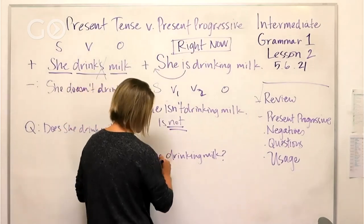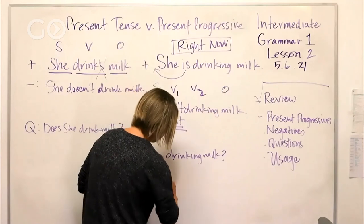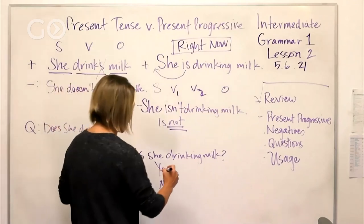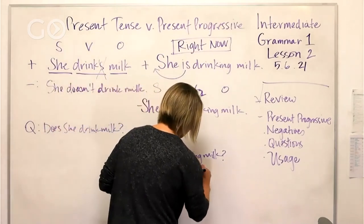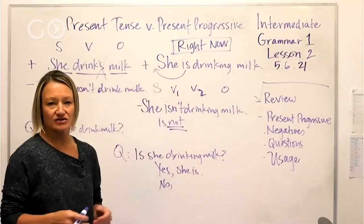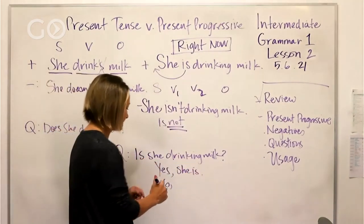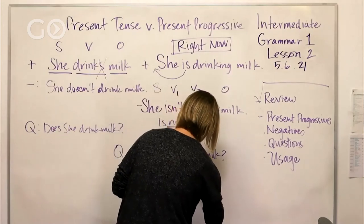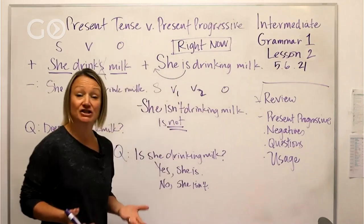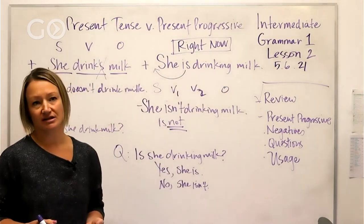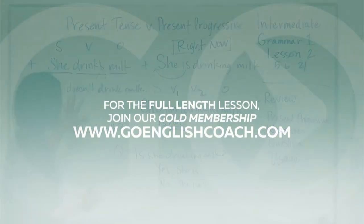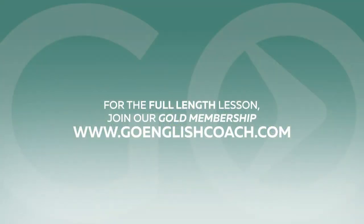It's a yes/no question, so we have two possible answers. 'Yes, she is.' You can simply answer 'yes, she is' or just 'yes.' And the negative answer: 'No, she isn't.' So yes, she is — and no, she isn't. We also talked a little about the pronunciation of these contractions.